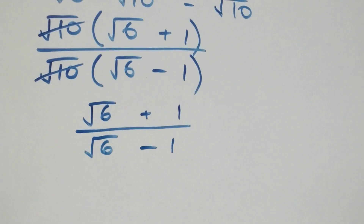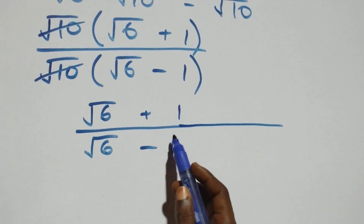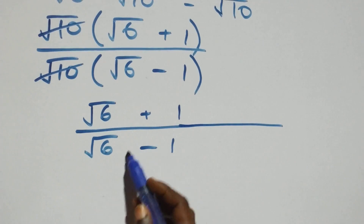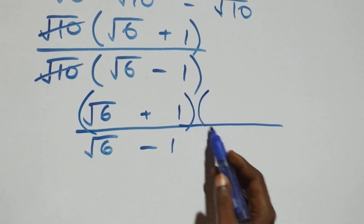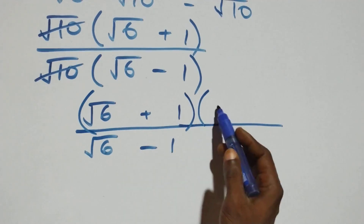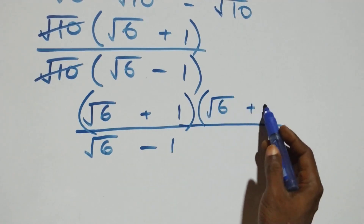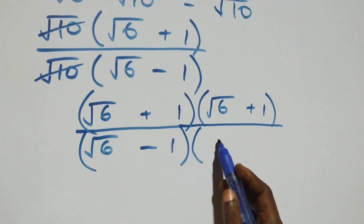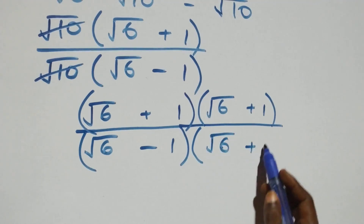At this next step, we rationalize this expression. We multiply both the numerator and the denominator by the conjugate of the denominator, which is root six plus one. So we also multiply the denominator by root six plus one.